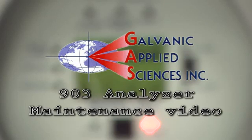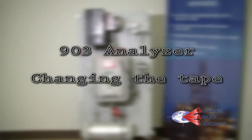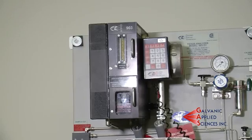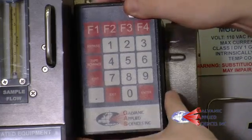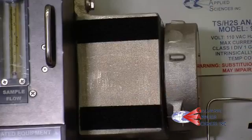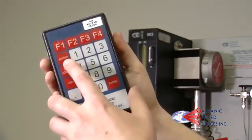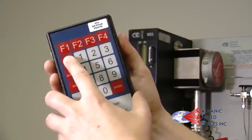Galvanic Applied Sciences 903 Analyzer Maintenance Video: Changing the Tape. Before doing any maintenance, take the handheld keypad for the 903 Analyzer. Press bypass to prevent any alarms from engaging. You will know bypass is activated when you see the flashing orange light below the display.